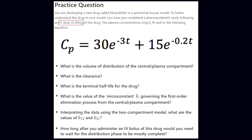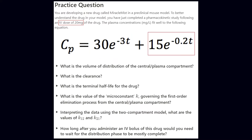The plasma concentrations fit well to the following equation: plasma concentration is equal to 30E to the negative 3T plus 15E to the negative 0.2T. This matches the model of A times E to the negative alphaT plus B times E to the negative betaT.